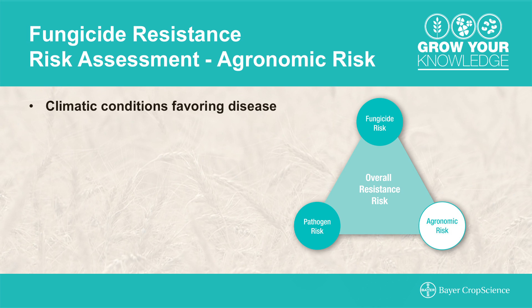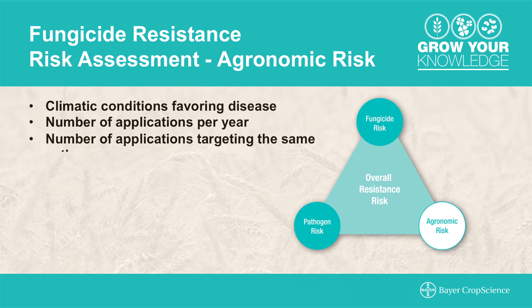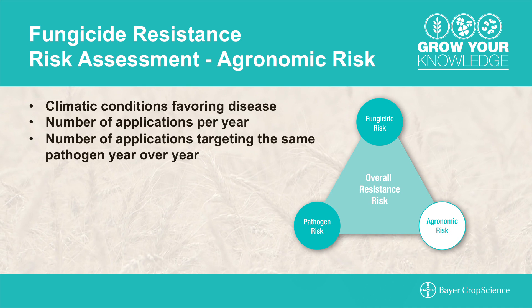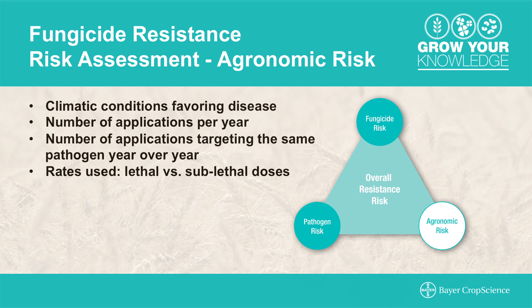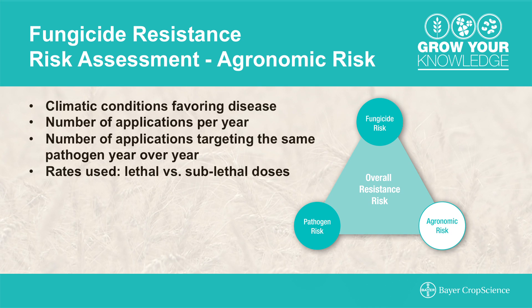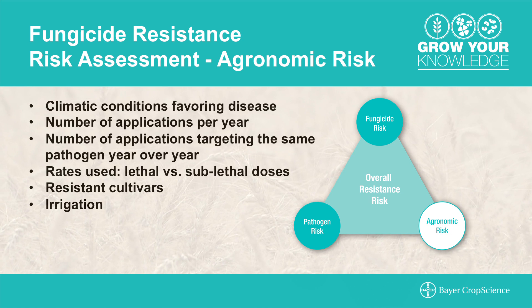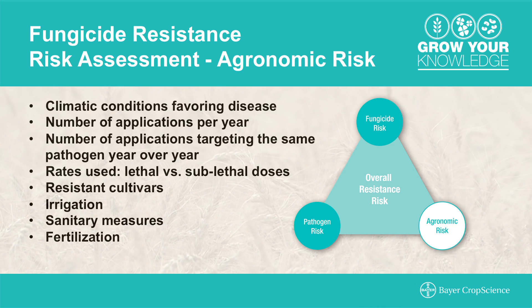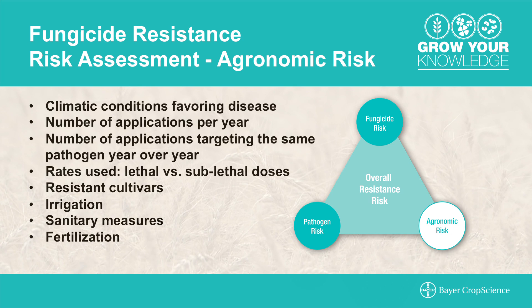Growers also need to consider agronomic practices to reduce the risk of fungicide resistance. How many applications per year is the grower utilizing with a single mode of action? How many applications are targeted on the same pathogen year over year? Are lethal or sublethal rates being used? Is the grower using resistant cultivars, irrigation, and tillage — burying residue so that the pathogen can't infect crops the next year? All of these things can help suppress pathogen populations.